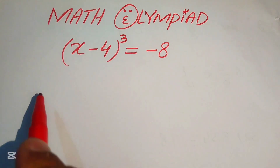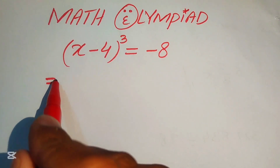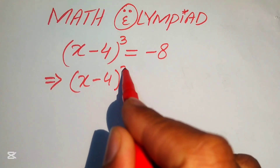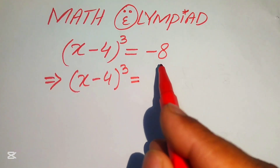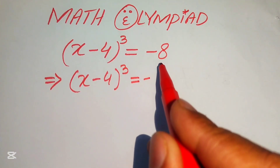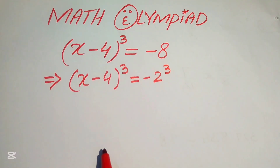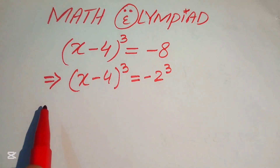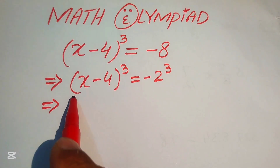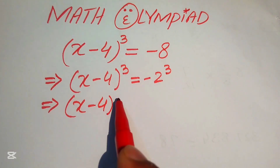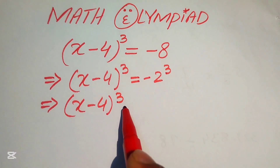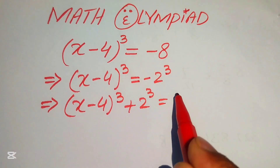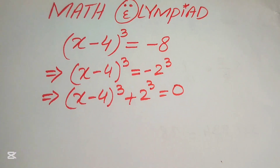The first step is to focus on the right-hand side. We write -8 in prime factor form: 8 = 2³, so we have (x - 4)³ = -2³. We move -2³ from the right-hand side to the left-hand side, so the negative term becomes positive: (x - 4)³ + 2³ = 0.